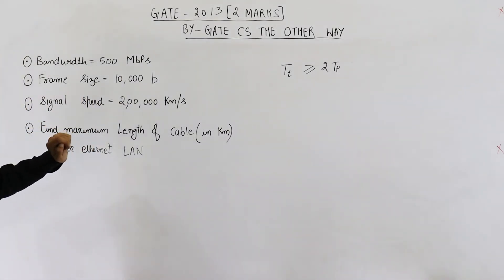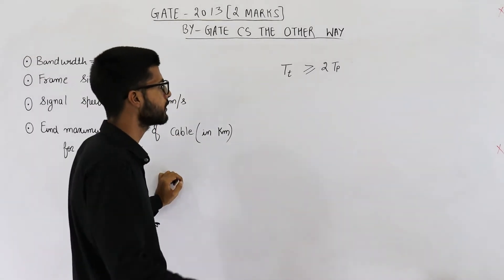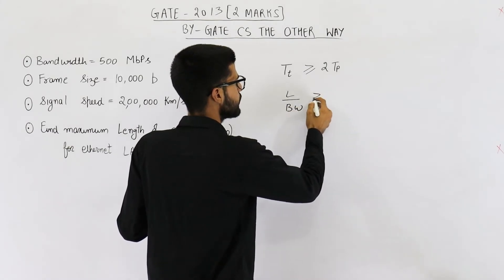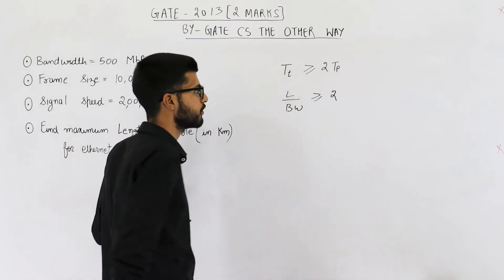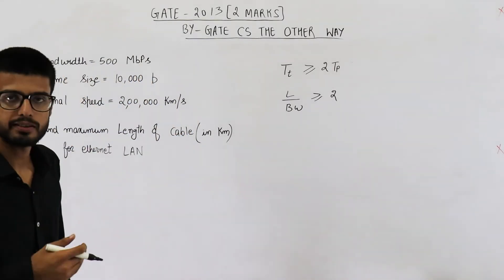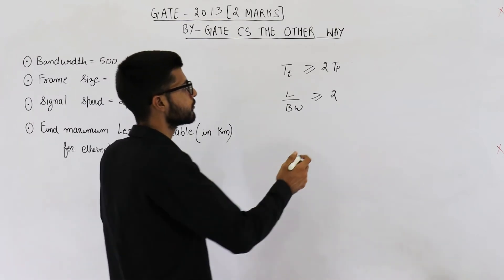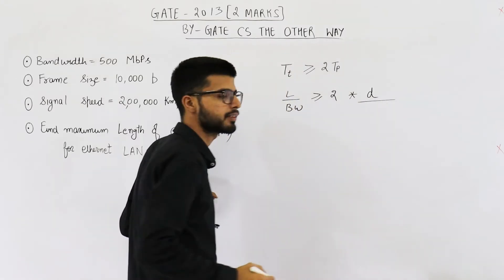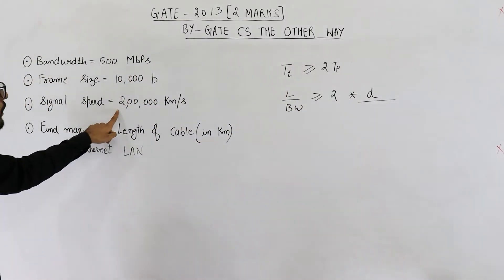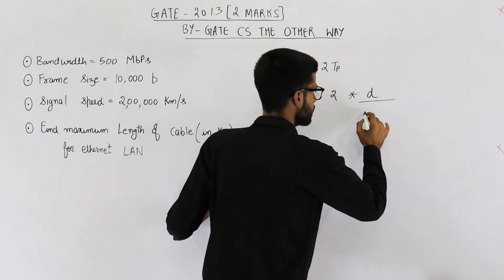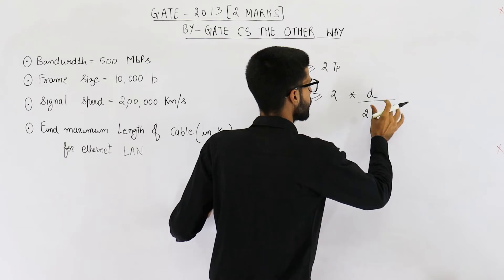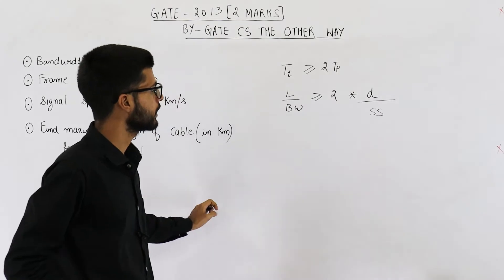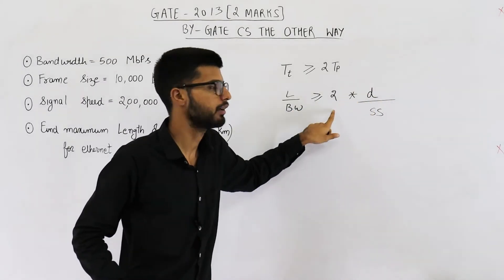Transmission delay is not given directly, but the formula for transmission delay is: length of the packet divided by bandwidth. This must be greater than or equal to twice the propagation delay. Propagation delay is the distance D between two nodes divided by the signal speed, which is given as 2×10⁵ kilometers per second. Let us substitute the values in the next step.